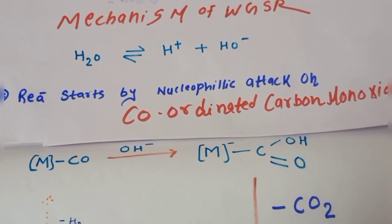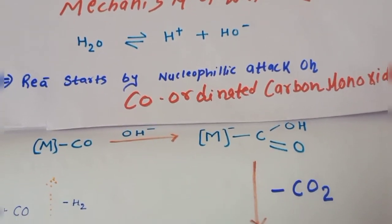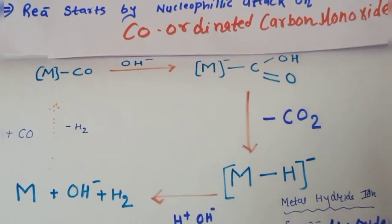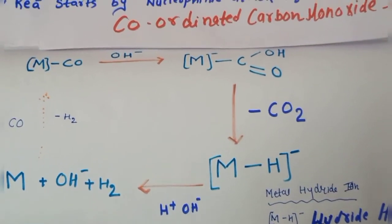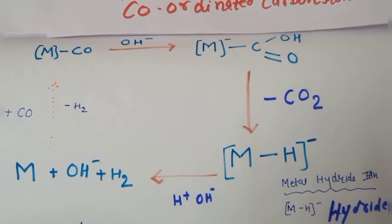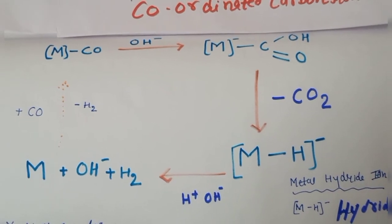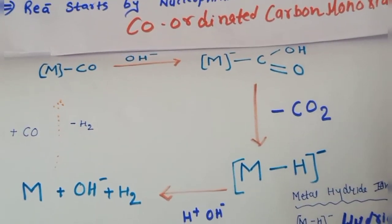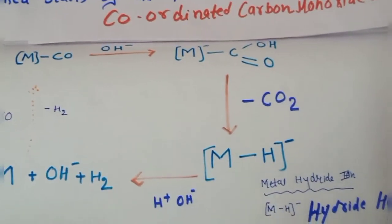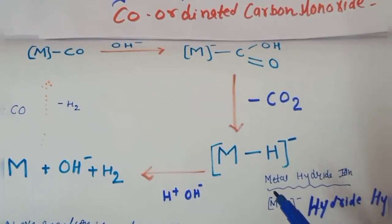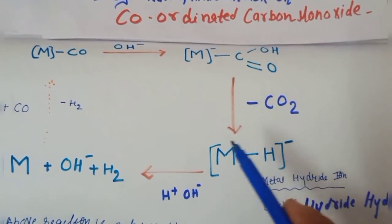Here we can see that OH-, that is our nucleophile, will attack on the metal center, and this metal center will form an anionic carboxylic acid intermediate. Soon this intermediate will eliminate one molecule of carbon dioxide, that is CO2, and a metal hydride anionic complex will form.